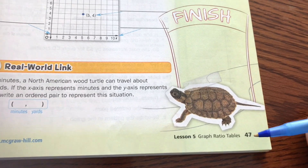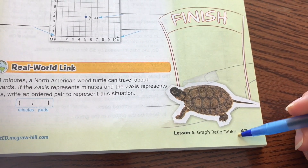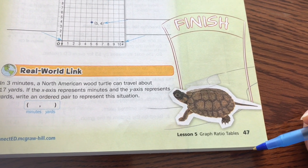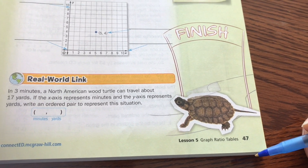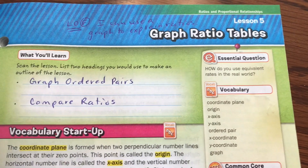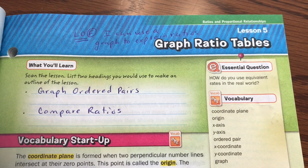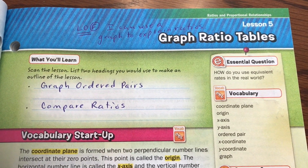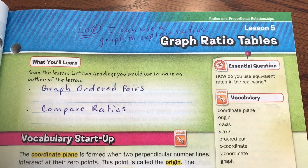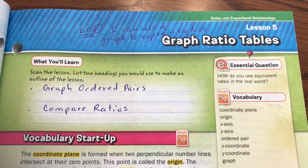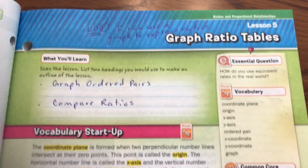We are on page 47 in the math book. Pause it and turn to page 47 if you're not there yet. Lesson 5 is called Graph Ratio Tables, and the learning objective is: I can use a graph to explain ratios.